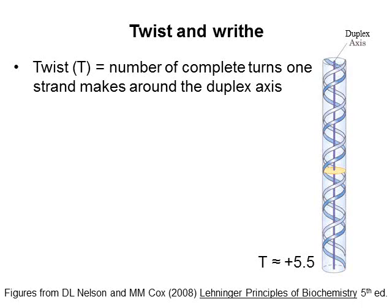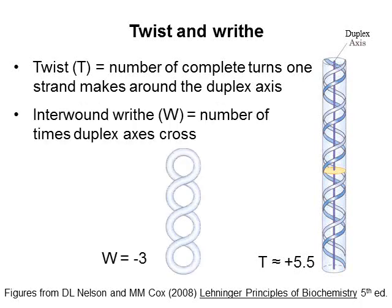Underwinding a double helix either reduces the twist or creates supercoiling in the form of writhe. Interwound writhe is the number of times that the helix axes cross each other. Underwinding right-handed DNA gives rise to negative writhe, which happens to be right-handed in the interwound form as shown.